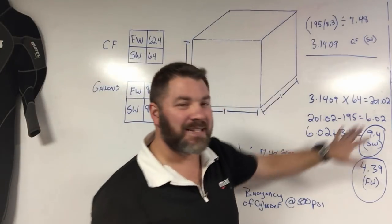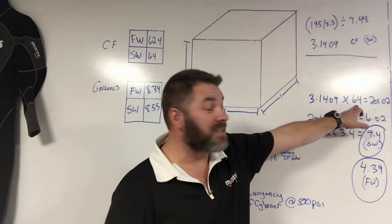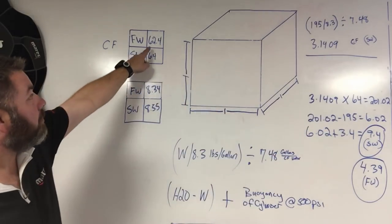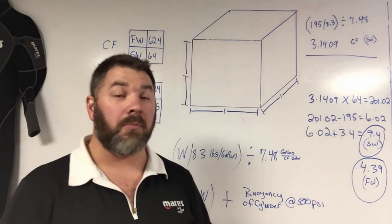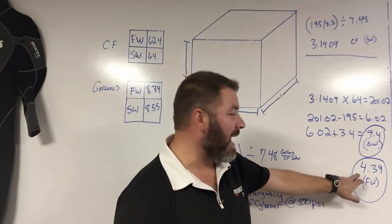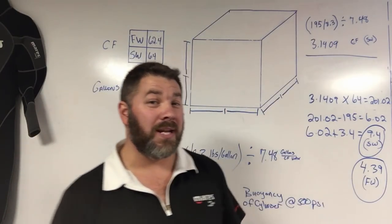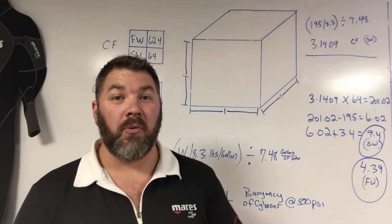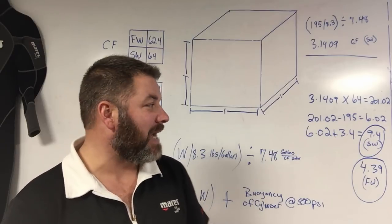If we did the exact same calculation but we replaced 64 with 62.4, which is the weight of freshwater per cubic foot, it comes in that I actually need 4.39 pounds to get neutrally buoyant with a cylinder with 500 psi in it.